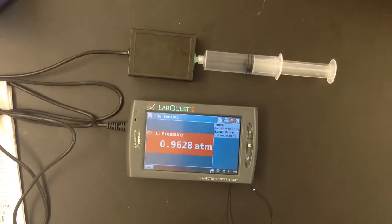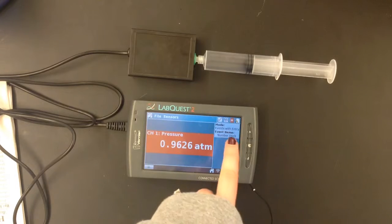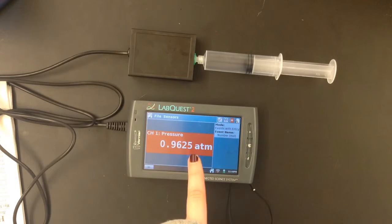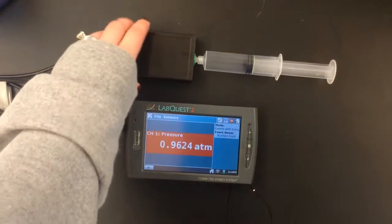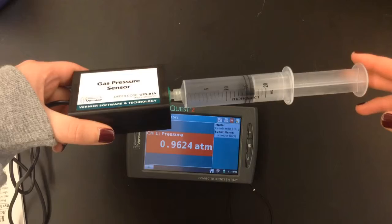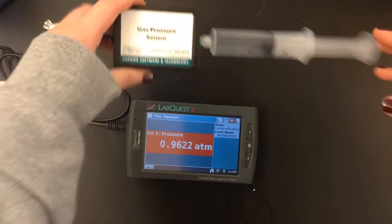So after that, we have our procedure. I've already done the first couple of steps and everything is set up. I have this set to events with entry. We're looking at numbers. Our units are in moles. Pressure is set to atmospheres. My syringe is set at 15 milliliters and it's connected to my gas pressure sensor.